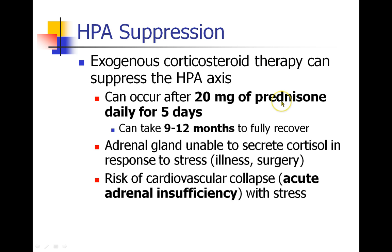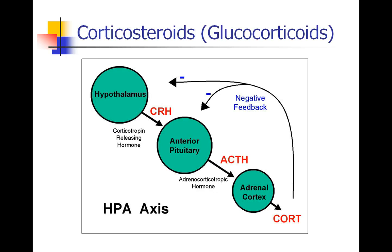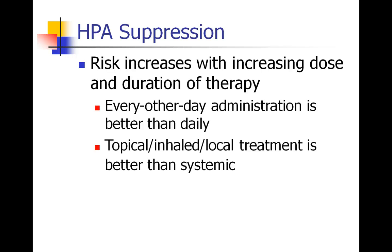At lower doses of prednisone, we don't expect this to be as much of a problem because we know the adrenal gland has been continuing to make its own cortisol as well. As we give more and more exogenous steroid, we're going to have more and more suppression of the HPA axis. If we're able to give steroids every other day instead of every day, that would be better. Or if steroids can be given in some way that is non-systemic — so topical steroids, inhaled steroids, local application of steroids — these would certainly be less likely to cause suppression at the adrenal gland.